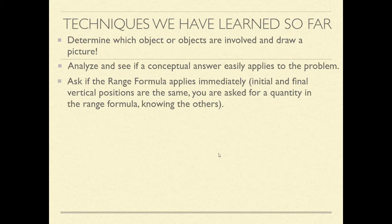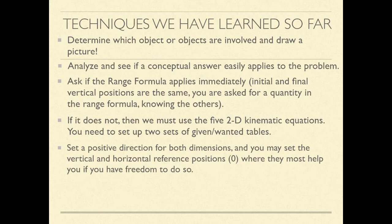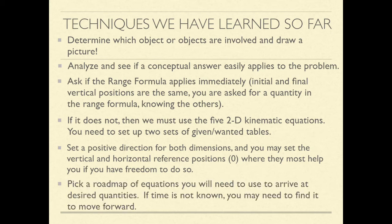If the range formula doesn't apply, use the other 2D kinematic equations — the set of five — and set up your given and wanted tables carefully. During this step, set positive and negative directions for horizontal and vertical motion to get your signs correct, and set reference positions where they most help you. Then pick your roadmap: choose the equation that has only one unknown so you can solve it algebraically, and work toward the requested answer.